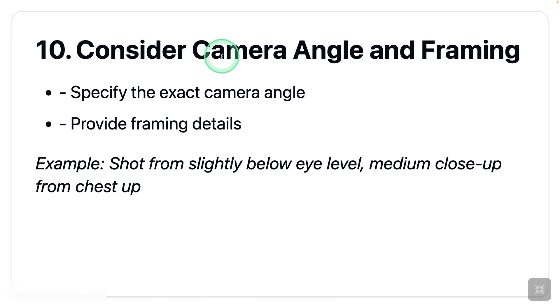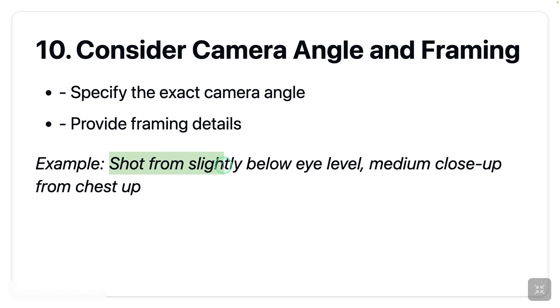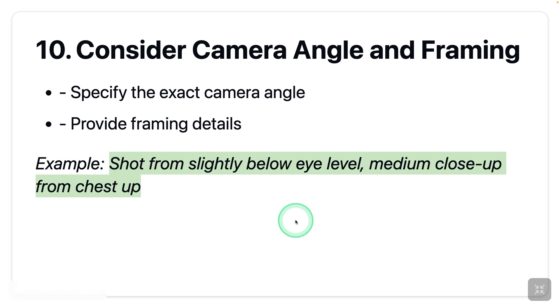Next: consider camera angle and framing. Specify the exact camera angle and provide framing details. Example: 'shot from slightly below eye level, medium close-up from chest up.' Just copying this — shot slightly below eye level, medium close-up in regards to the camera angle. This is beautiful.